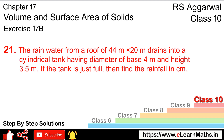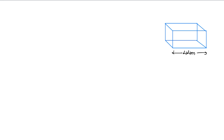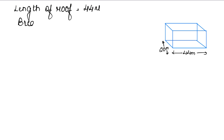हमें पता है जो हमारा roof होता है वो cuboid form में होता है। देखिए यह एक kind की हमारी roof है और इस पे water fill है। इसकी dimension दे रखिए — 44 meter into 20 meter। तो मान लीजिए यह 44 meter है और यह 20 meter है। हमें यह बताना है कि कितनी height तक पानी भरा है, तो length of roof is 44 meter, breadth of roof is 20 meter।